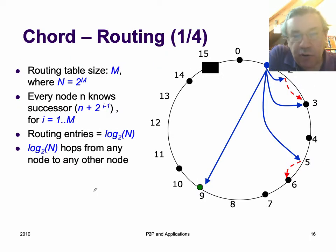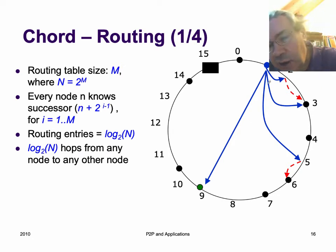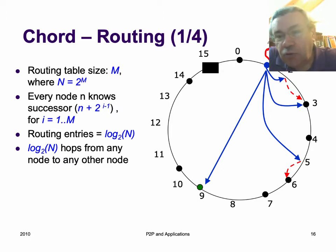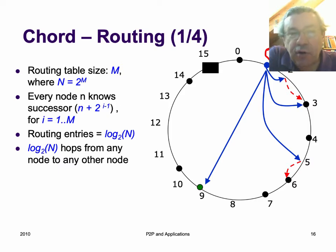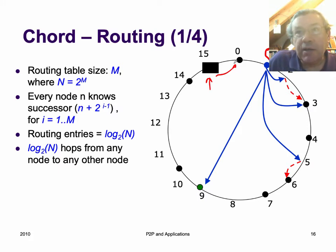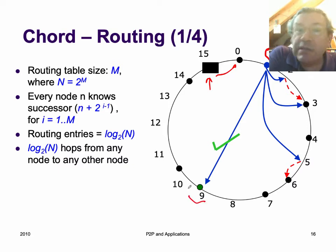Let's see how routing works on Chord. There's a routing table stored at each node. If 2 to the M equals N — which is 16 here — then M equals 4. Every node knows successors at successively increasing distances: 1, 2, 4, and 8 steps away. So if we're at node 1 and we do a lookup for key 15, we will do routing. The first hop we do goes to node 9, because it's the biggest hop we can make that is still less than 15.